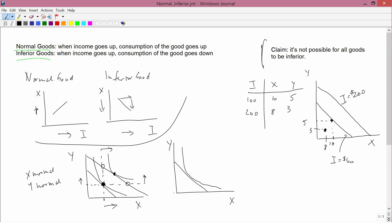The second example, I'm going to assume that X is inferior and Y is normal. Of course, I'm not going to have an example with both of them being inferior because I already proved it's not possible for all goods to be inferior. But here I got one of the goods, just one of the goods to be inferior, the other one is normal.